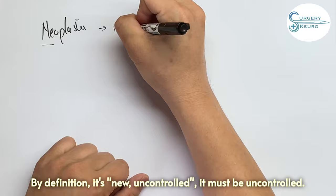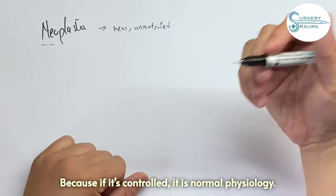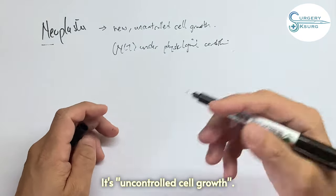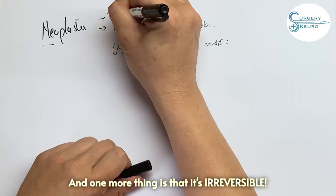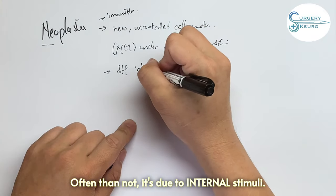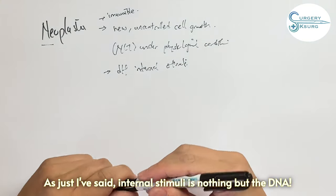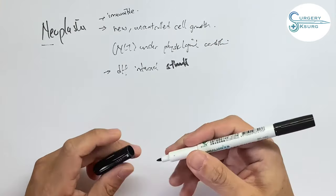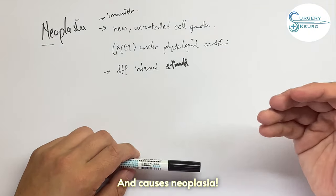By definition, it is a new uncontrolled cell growth. It must be uncontrolled because controlled is normal physiology. It is something out of ordinary and one more thing - it is irreversible. Often than not, it is due to internal stimuli. As I just said, internal stimuli is nothing but the DNA. The DNA is beyond repair and causes this neoplasia.